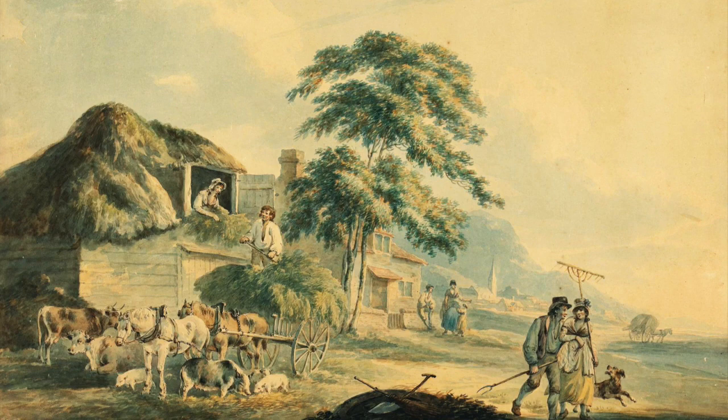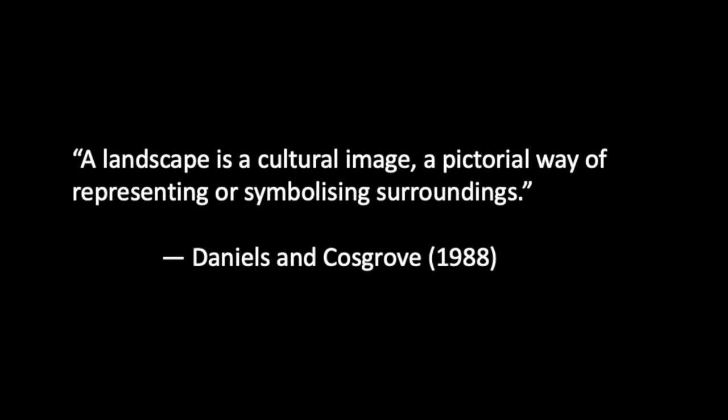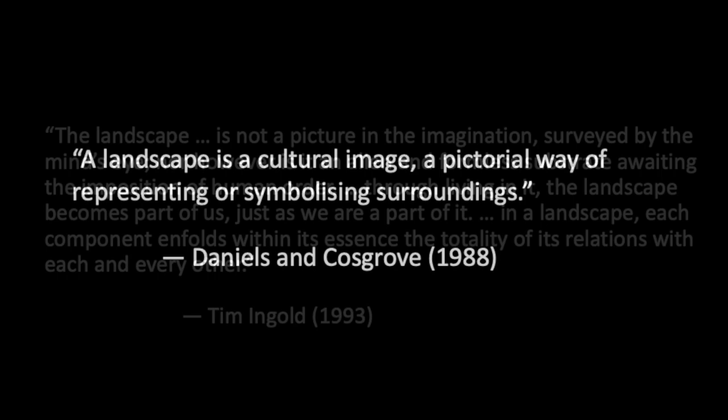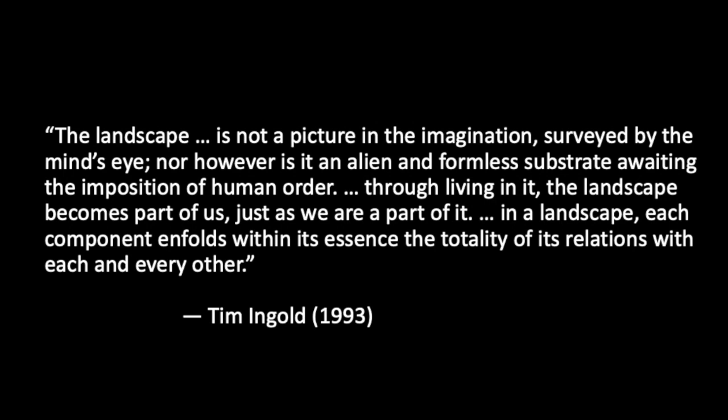Geographers, anthropologists, and archaeologists who have adopted the term landscape have characterized it in different ways. Daniels and Cosgrove provide a more traditional definition of landscape simply as a pictorial way of representing or symbolizing surroundings. By contrast, in very influential work by Tim Ingold, landscape is not a picture in the imagination surveyed by the mind's eye, nor is it an alien and formless substrate awaiting the imposition of human order. Through living in it, the landscape becomes part of us just as we are part of it. In a landscape, each component unfolds within its essence the totality of its relations with each and every other.